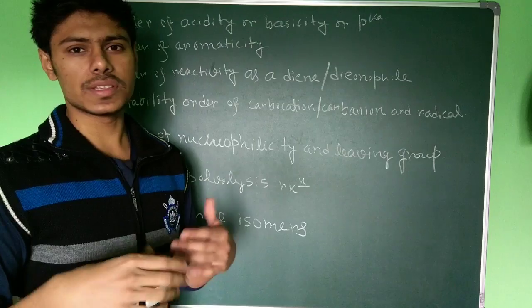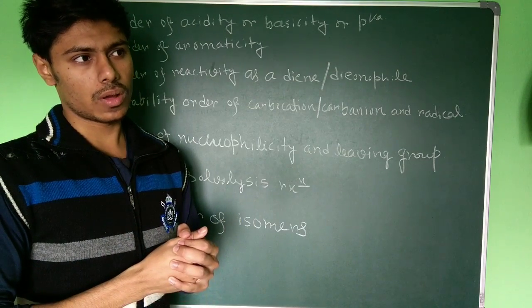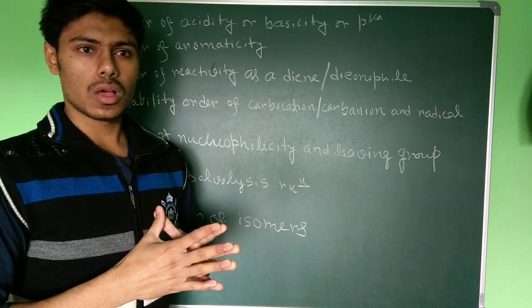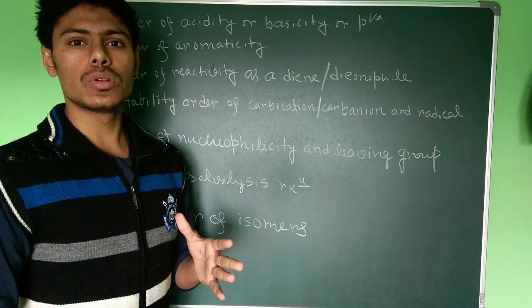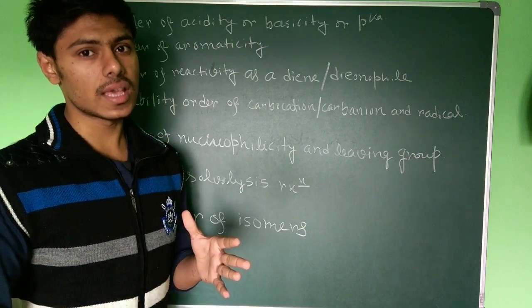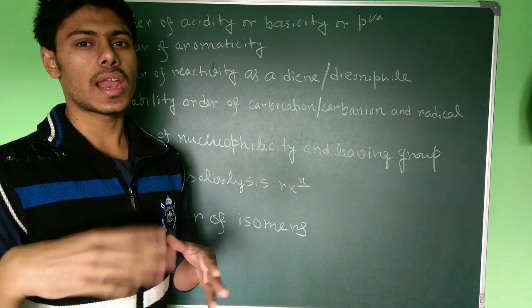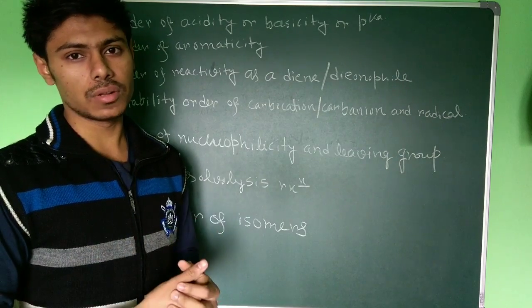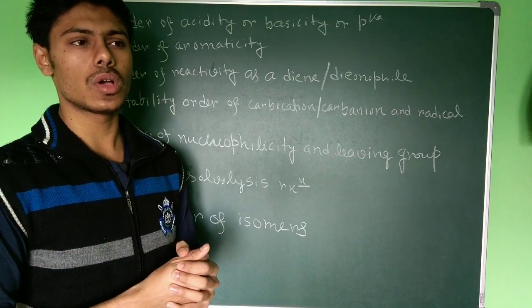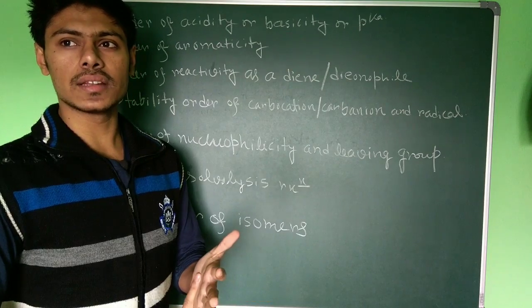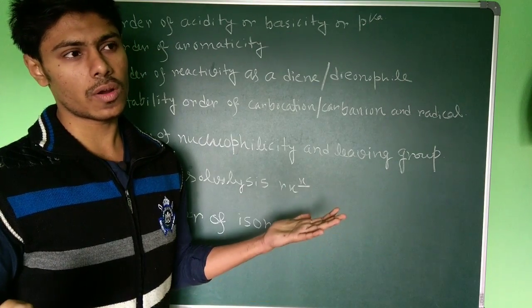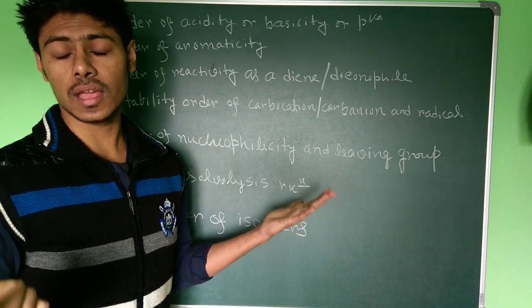In s-cis conformation, if you have bulky groups, there will be steric hindrances. You have to identify which compound will prefer to stay in the s-cis conformation and according to that their reactivity will increase. You can find it in Clayden and books for pericyclic reactions and also if you solve questions you will get some examples.